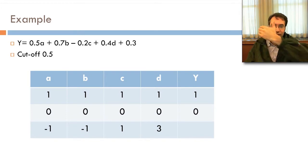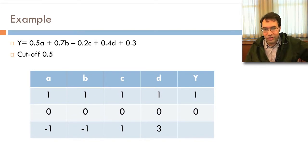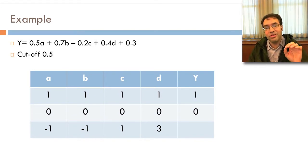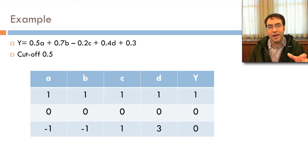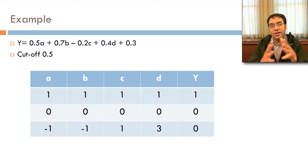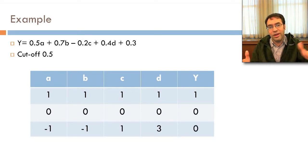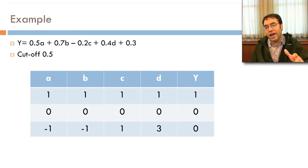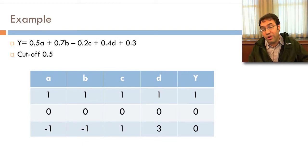If they're all 0, then 0 plus 0.3 is less than 0.5, so we get 0. For values of negative 1, negative 1, 1, and 3 — pause the video and try it out — you'll find the answer is below 0.5, so it's 0.